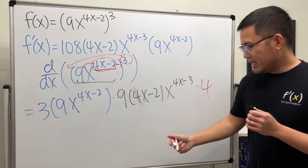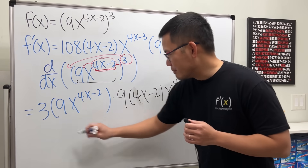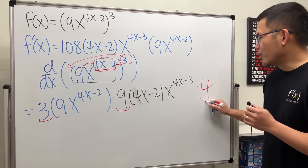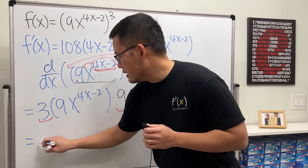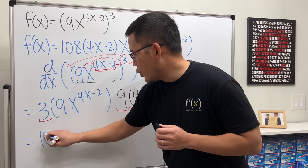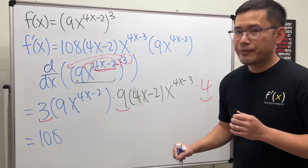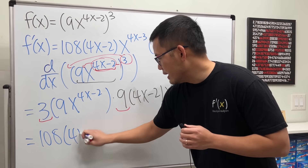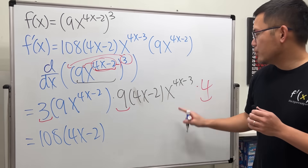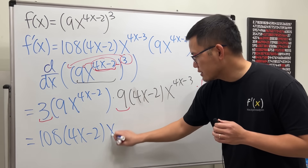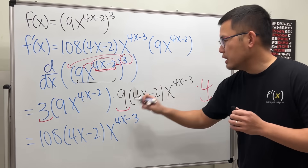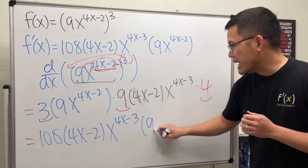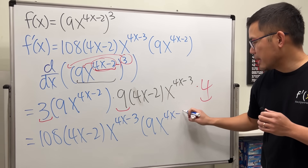Multiplying the numbers: 3 times 9 is 27, times 4 is 108. So the result has 108 out front, then the factor (4x minus 2), then x to the (4x minus 3), and finally the remaining factor (9x to the 4x minus 2). That's what the teacher's answer looks like.